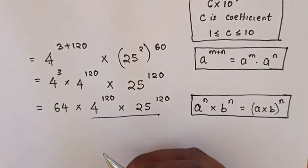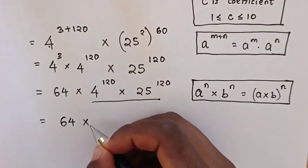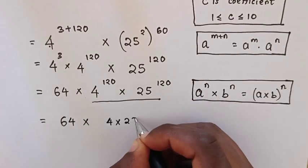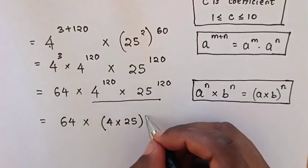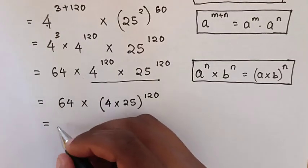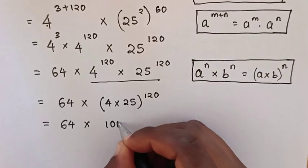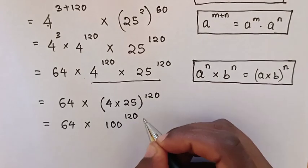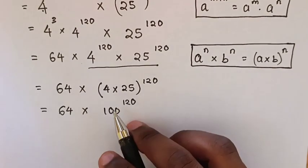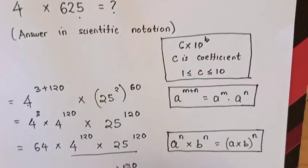Then, this will be equal to 64 times 4 power of 120. This will be equal to 64 times 4 times 25, power of 120, which is 64 times 100 power of 120. From here, the exponent has base 100, and it should be in base of 10 power of B.